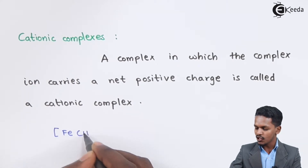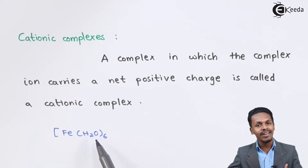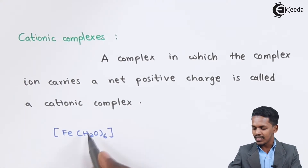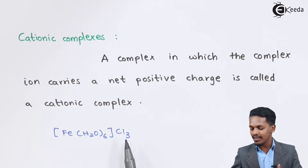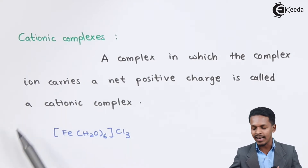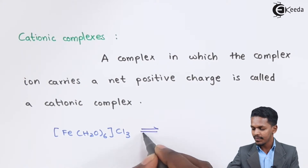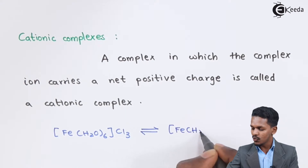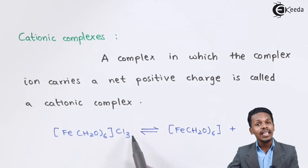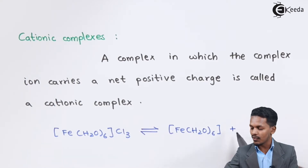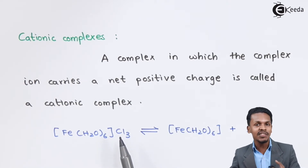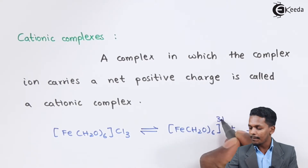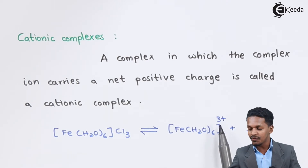For example, consider the complex [Fe(H₂O)₆] where six water ligands surround the central atom Fe in the secondary entity. If the primary entity is Cl₃, then the Cl⁻ ions surround Fe in the primary sphere. When dissolved in water, it dissociates to give [Fe(H₂O)₆]³⁺ and three Cl⁻ ions.